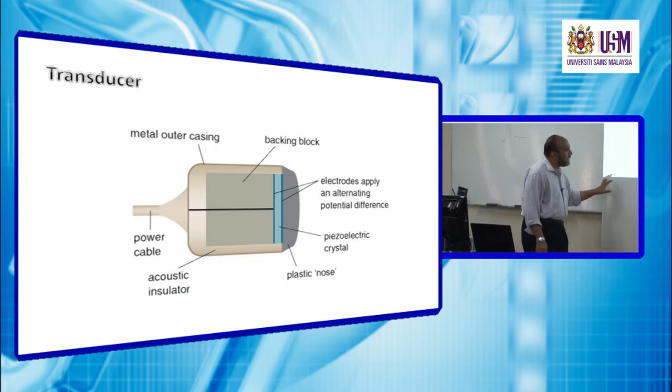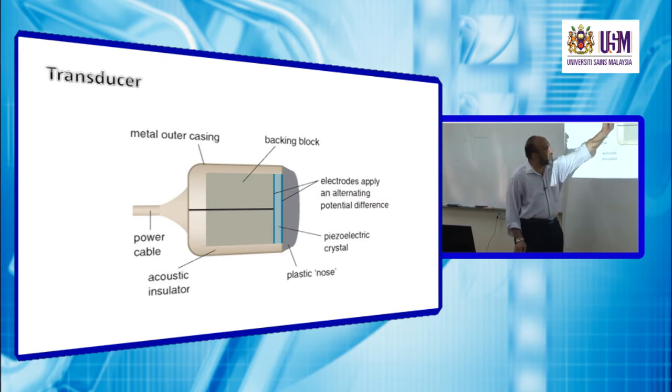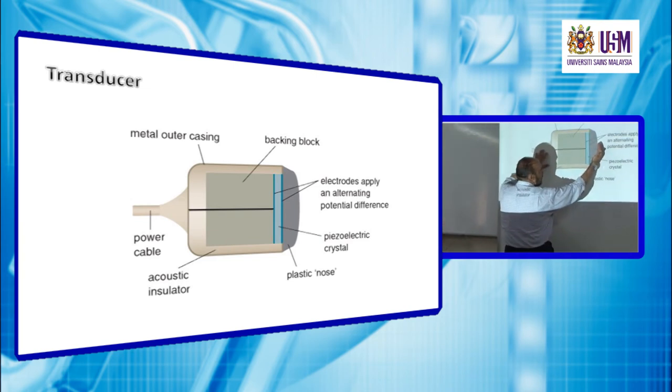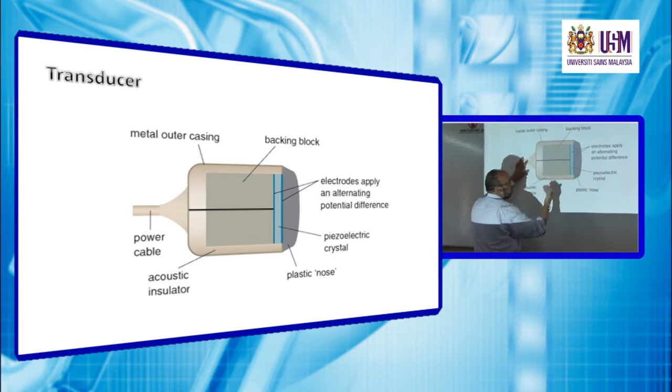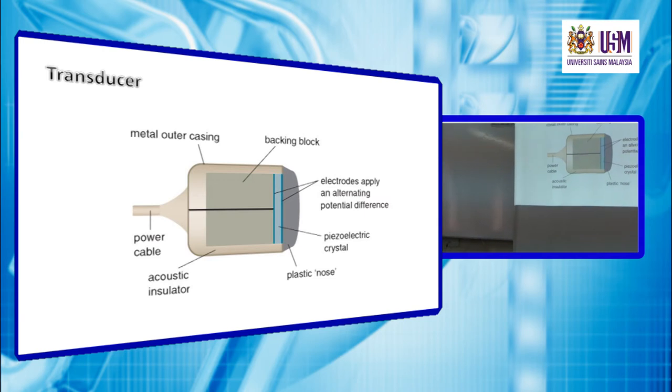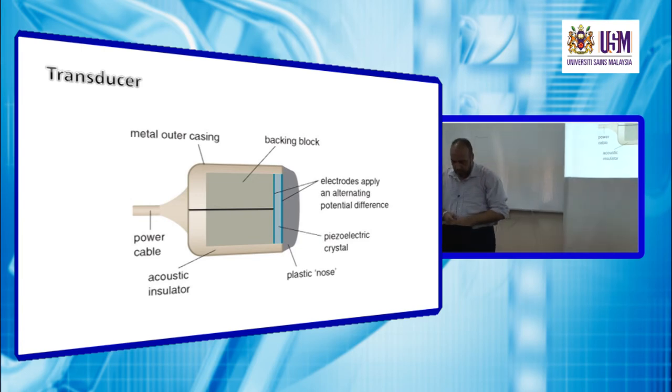This one is the transducer. Here this is the body of the transducer and the blue one is the crystal. Suppose the ground is here. When the ground presses the crystal, electric signal is generated, and this electric signal is taken through wire to the recording instrument.